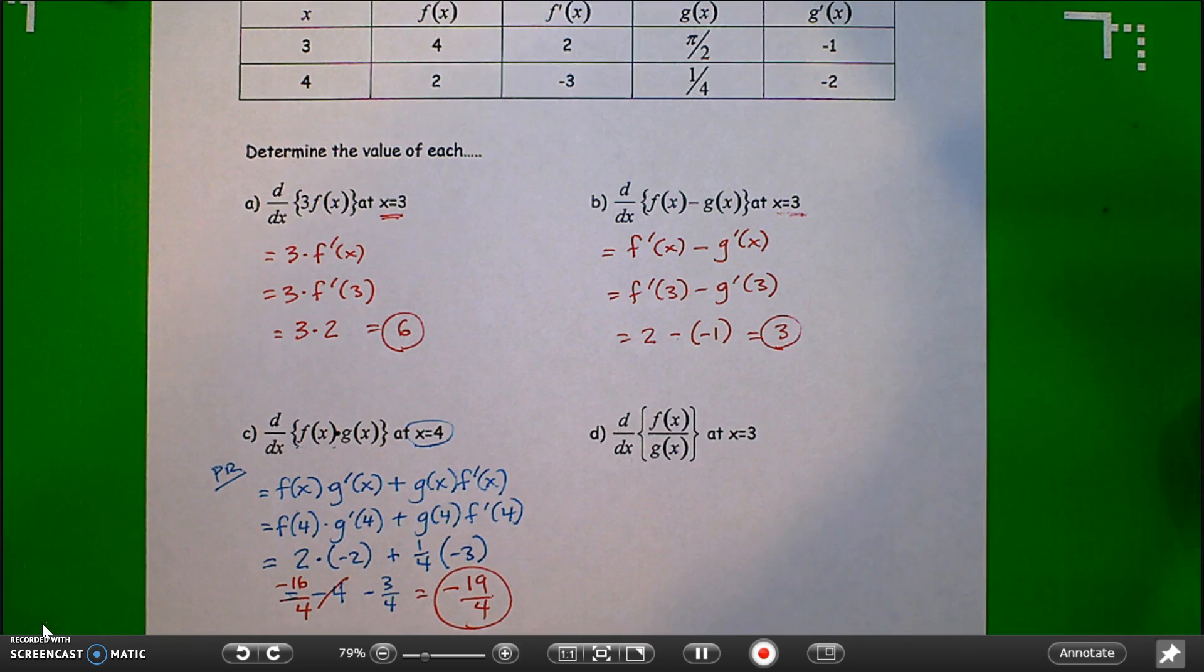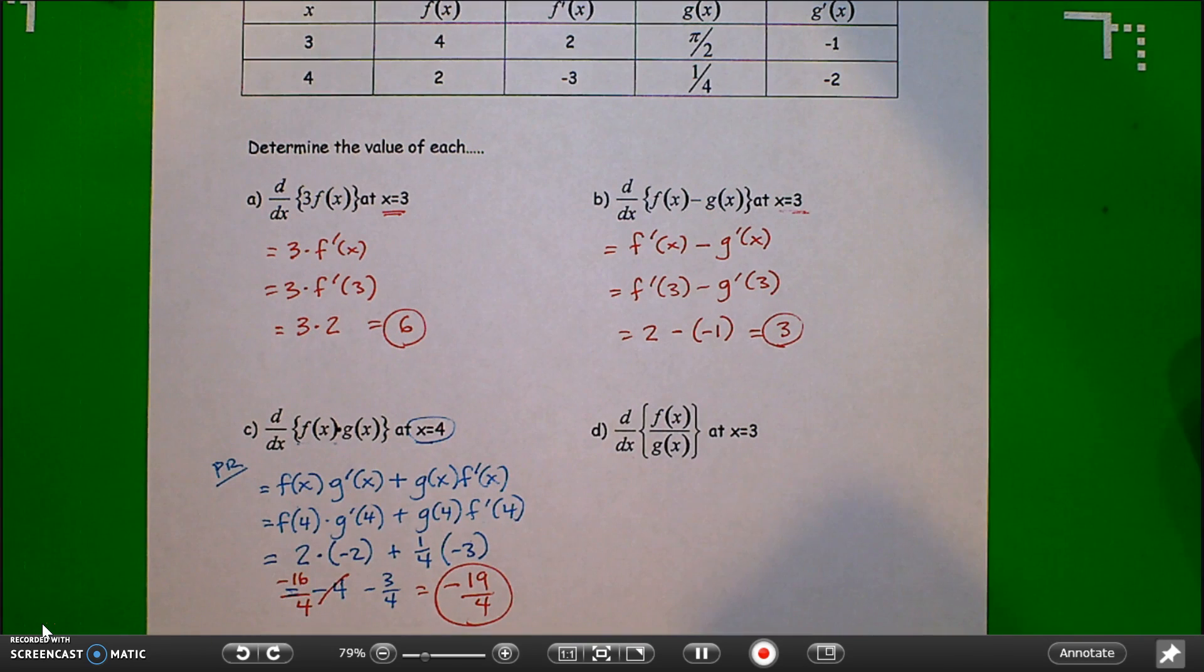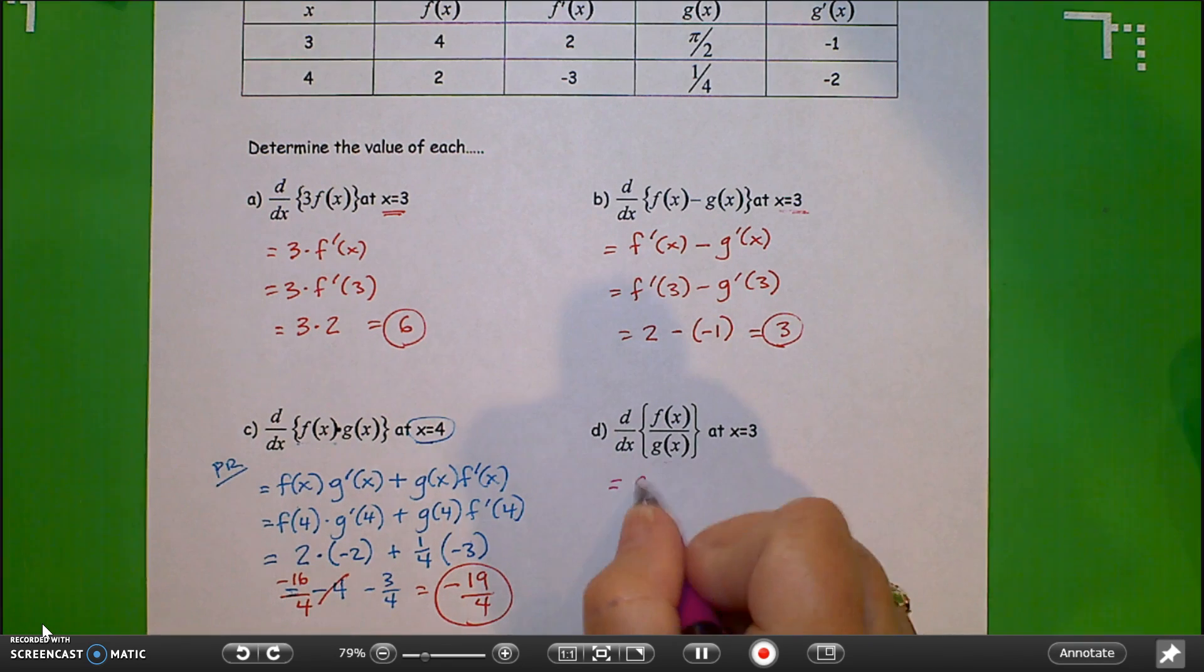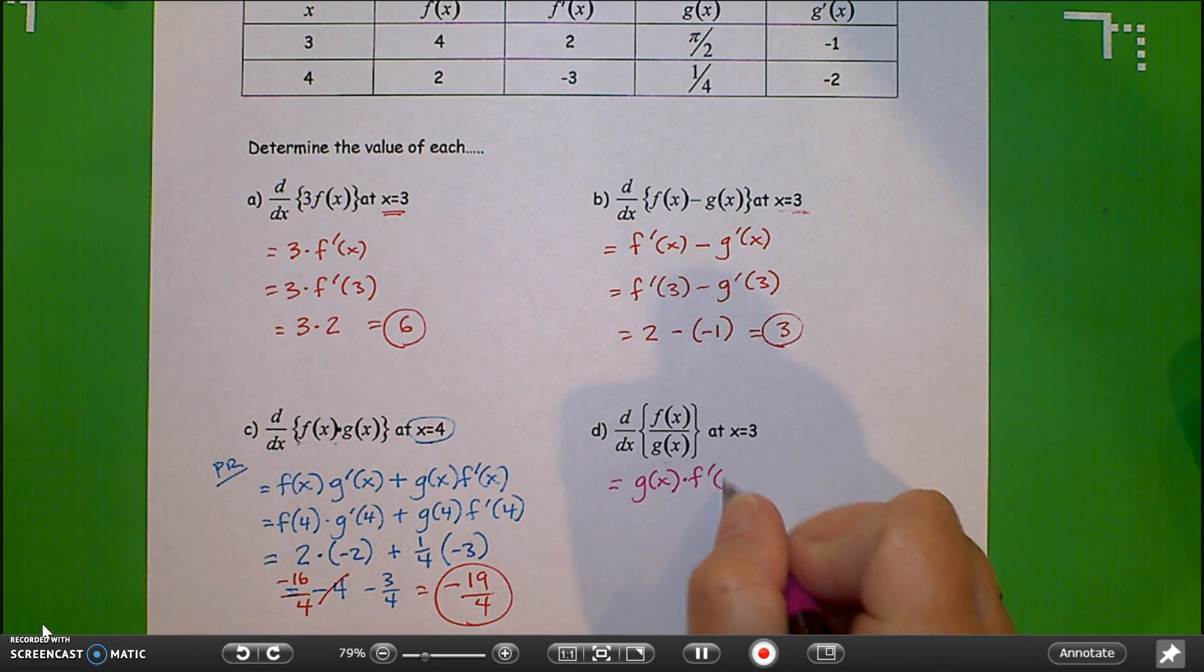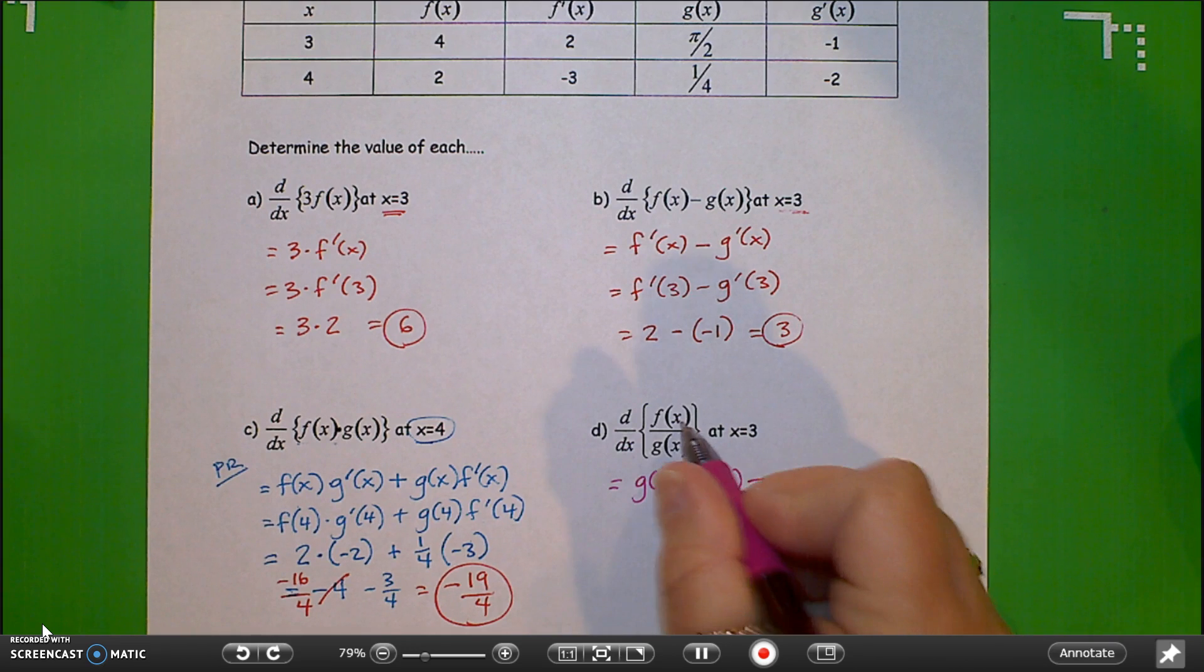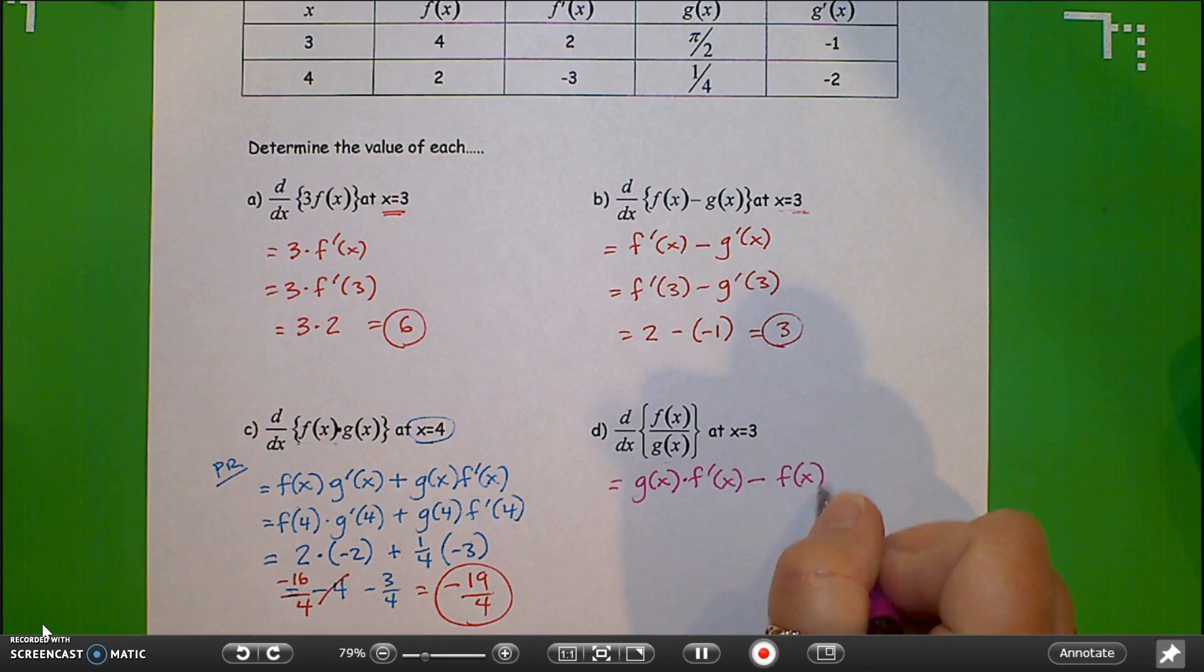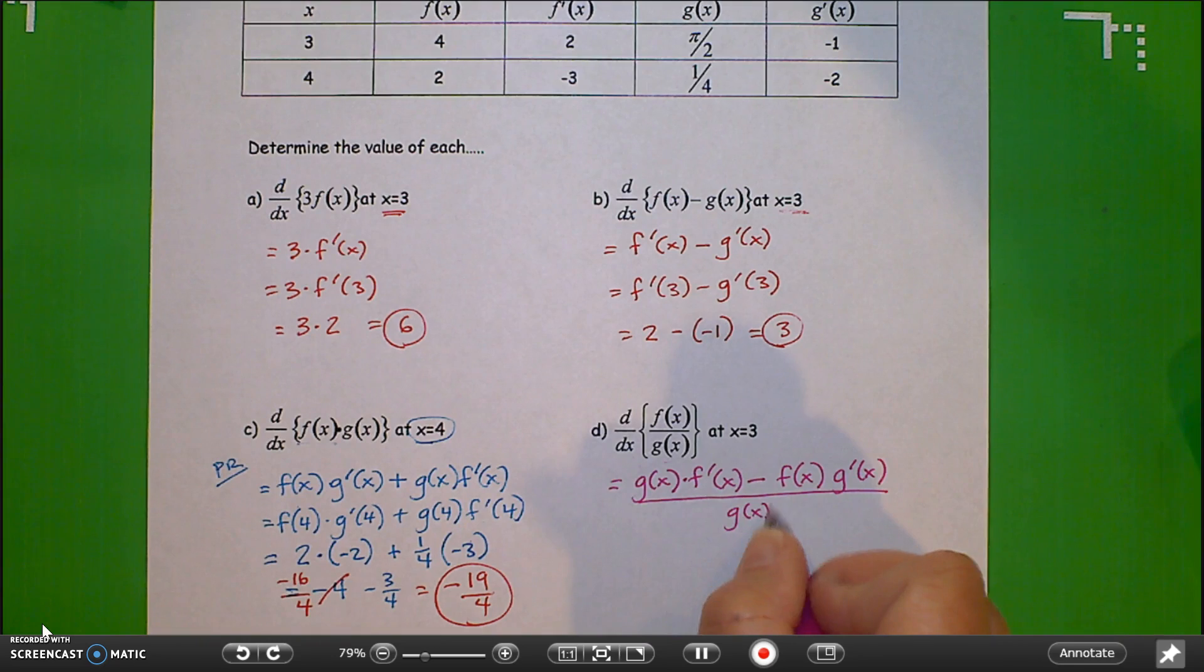Part D requires the quotient rule. So for the quotient rule, we always start at the bottom. Take the function as is, g of x, times the derivative of the top, f prime of x, minus the top function, f of x, times the derivative of the bottom, g prime of x, all over g of x squared.